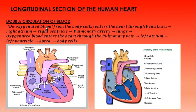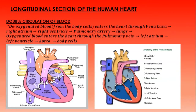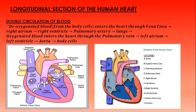Deoxygenated blood from the body cells enters the heart through the vena cava. The one on top is called the superior vena cava, carrying blood from the head. The inferior vena cava comes from the abdomen, trunk, legs, and lower parts of the body. All blood from these parts passes through both the superior and inferior vena cava into the right atrium — the first chamber that receives the blood.